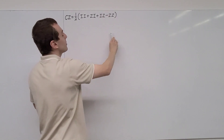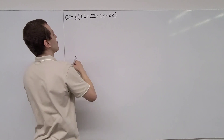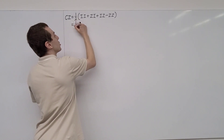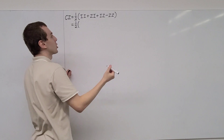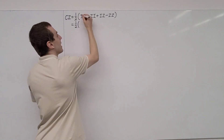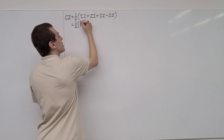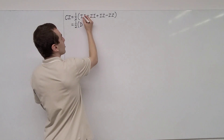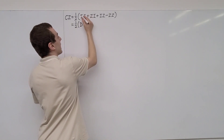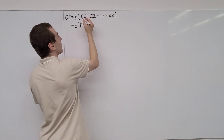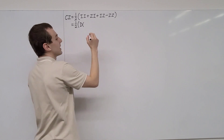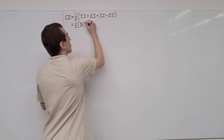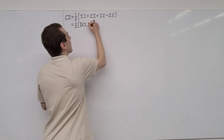We're going to write them using some other notation. We'll still have this coefficient of one-half — that is a normalization coefficient. Then we're going to have capital D for diagonal. When we take the tensor product of an identity with another identity, we're actually going to get two identities along the diagonal, so we can write that as I, I.